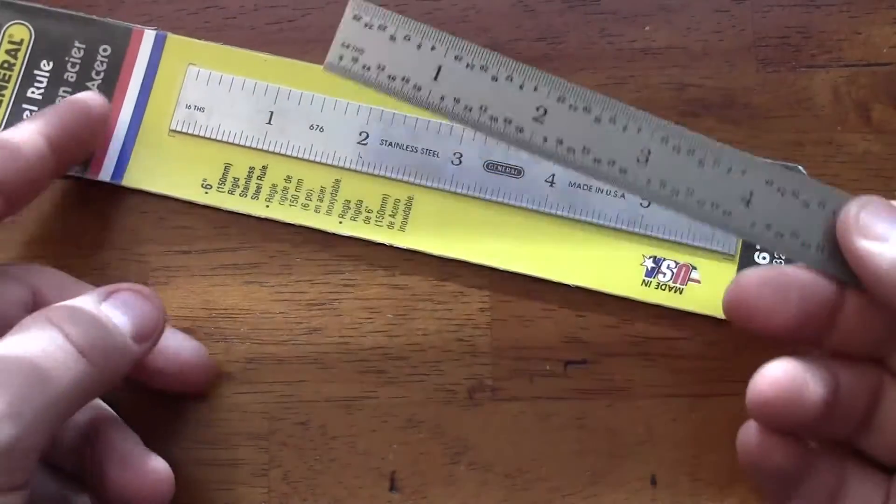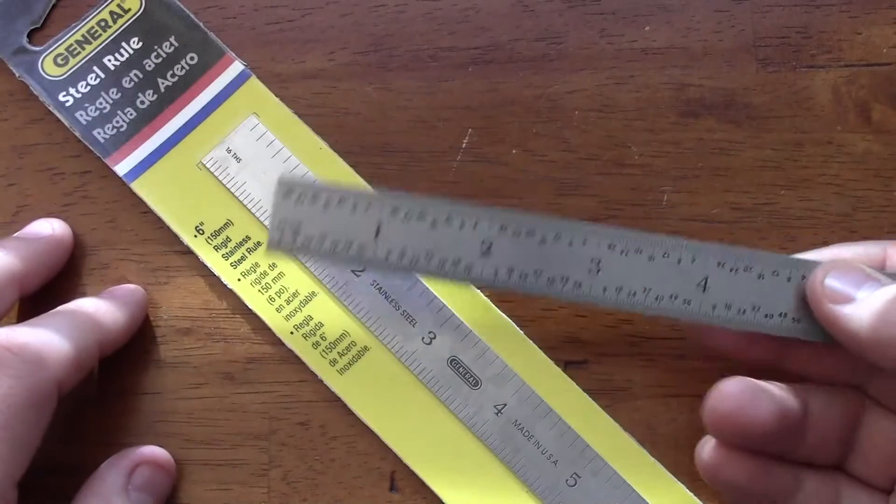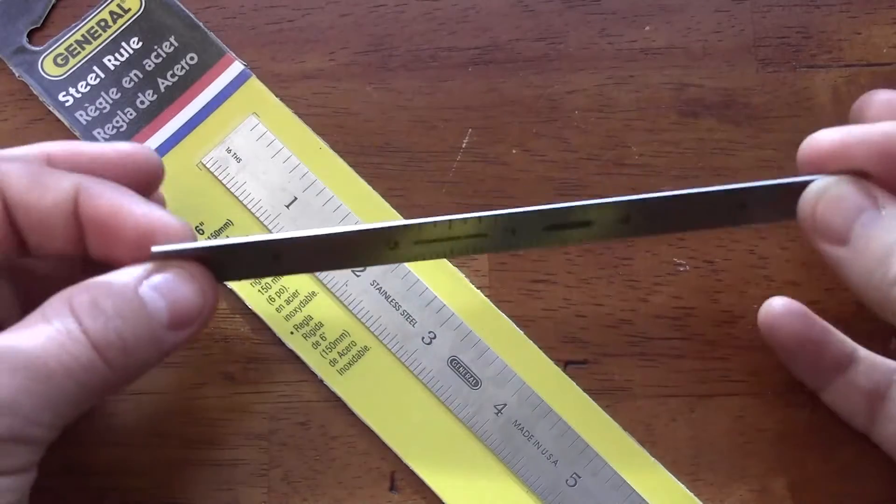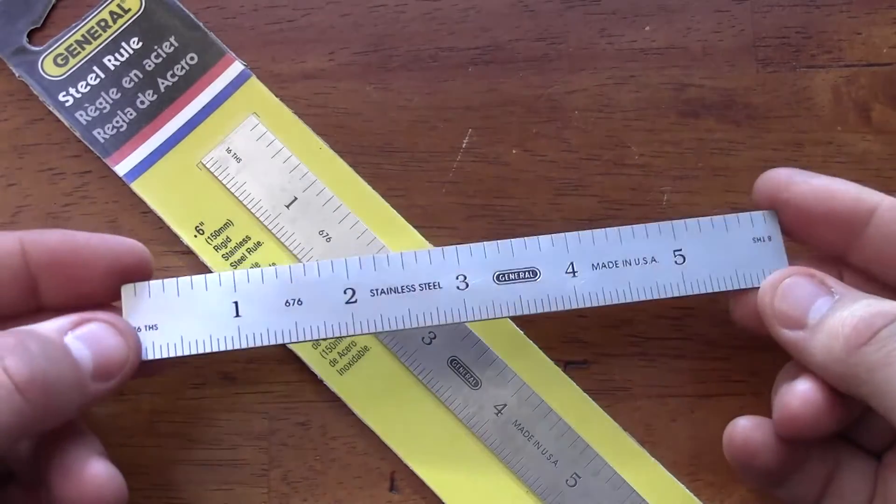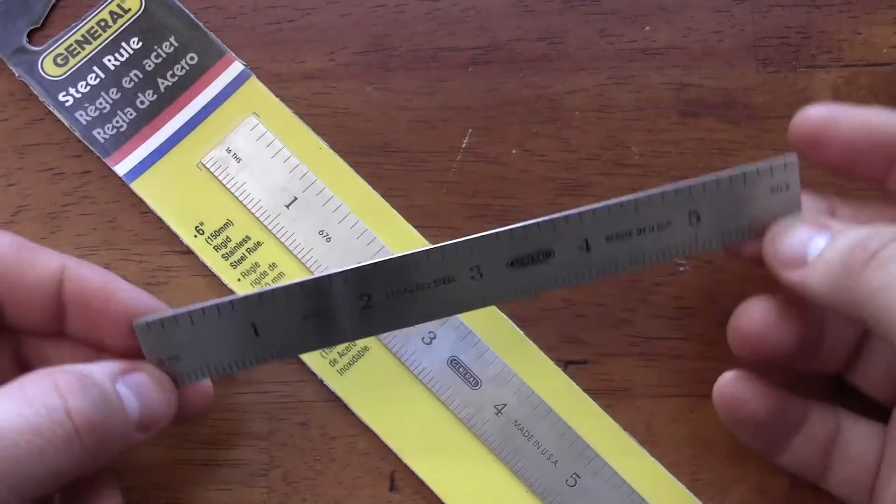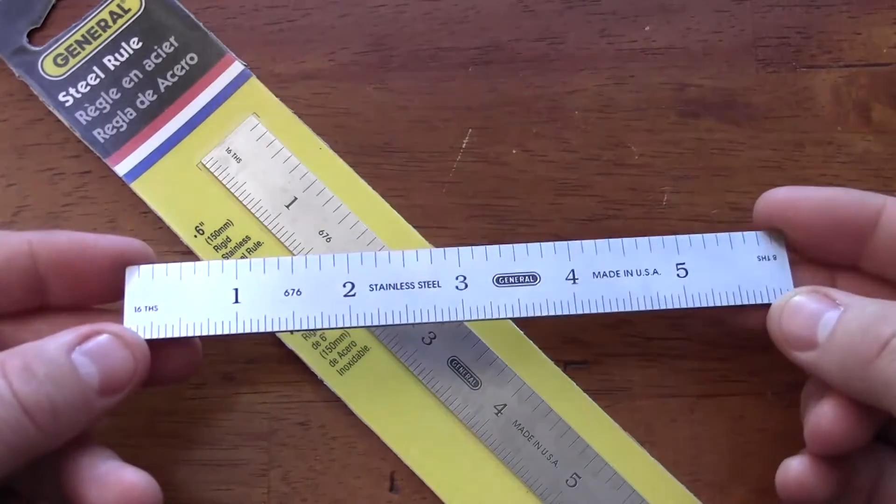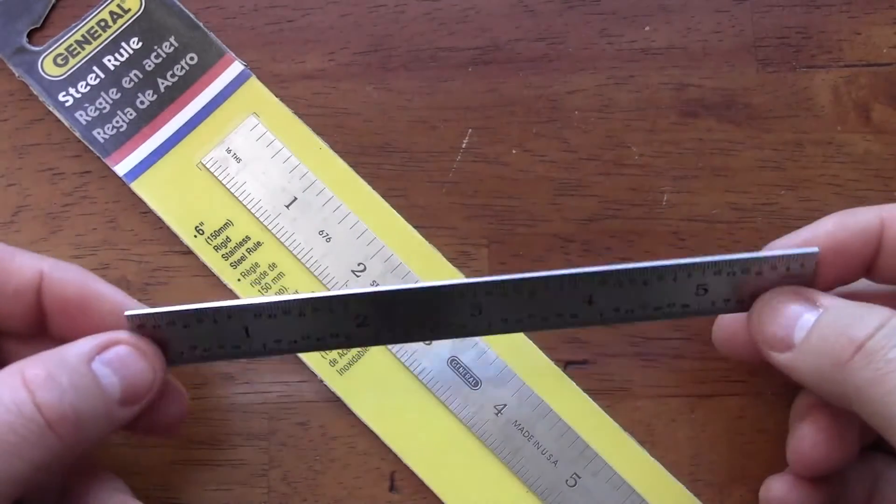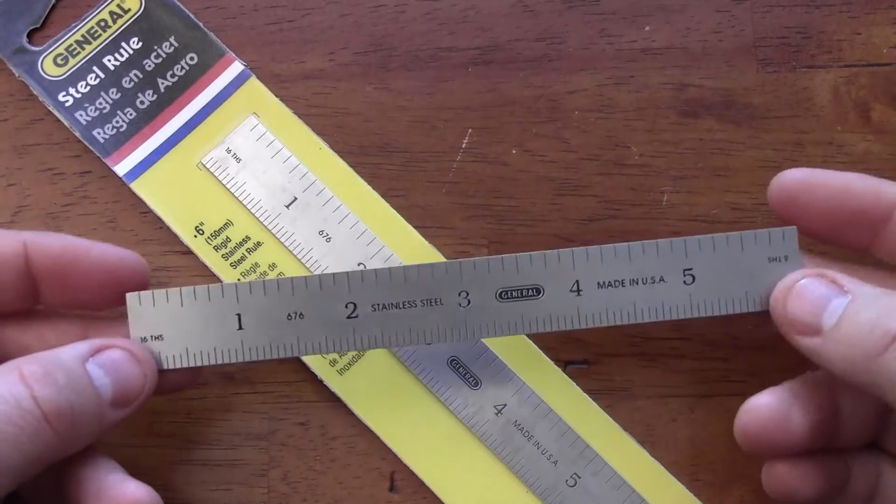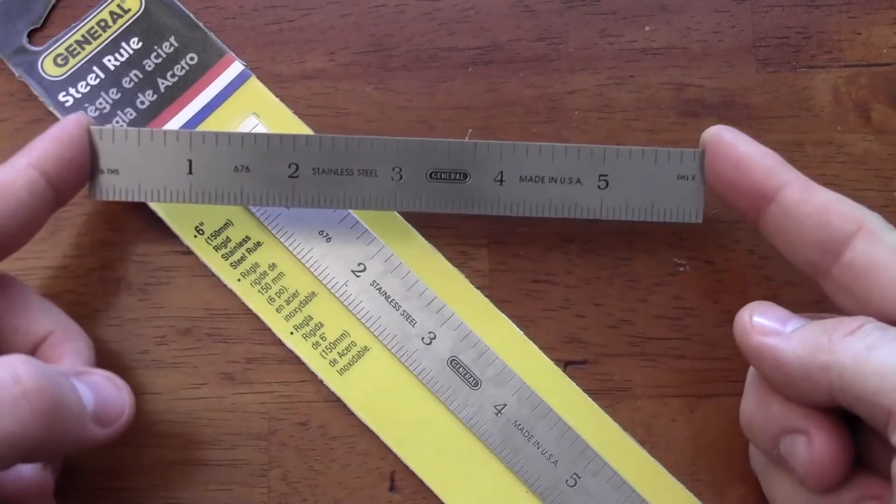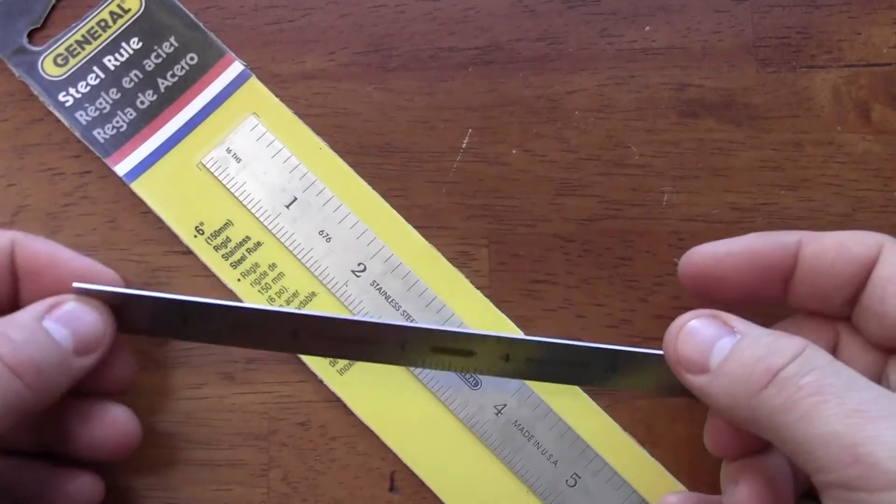I bought a couple of these. They were about eight dollars at my local hardware store. One of the guys at my work had one of these and I thought, man, that is just an awesome little tool. I found myself needing to draw little lines and do different measurements. This is a very simple, very inexpensive piece of equipment to have in your everyday carry, whether that's a man bag. It's only six inches, you could slip it into a cargo pocket, something like that.